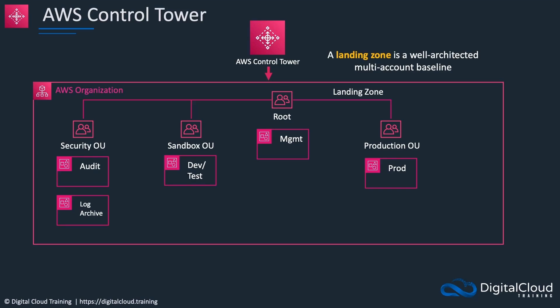The landing zone is a well-architected multi-account baseline. AWS have worked out what a good architecture looks like — this is the starting point for you. You've got one production account but you can then add more: development accounts, test accounts, by creating more OUs. They've started off this topology for you including auditing, log archiving, a sandbox for dev tests, and there's a whole bunch of preventive guardrails which disallow API actions using SCPs. They're starting from a baseline with good security, and from here you can customize and add to your needs.